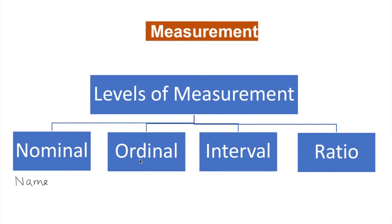The next one is ordinal. Ordinal sounds like order. So there's some sort of ordering from highest to lowest or lowest to highest. For example, if we talk about a grade level — if you get a 90 you get an A, if you get an 80 you get a B — so a certain score will assign you or earn you a grade.